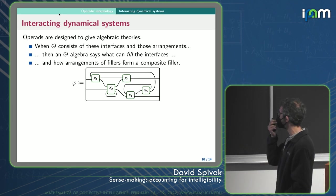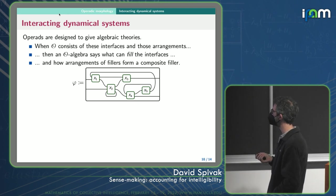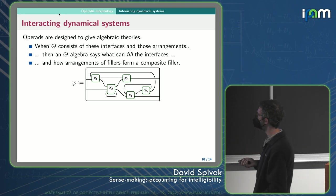So operads are designed to give algebraic theories. Basically, you don't just have these boxes, you install stuff into them, you put stuff inside them. So if you had an operad that consisted of certain interfaces in certain arrangements, then what's called an O algebra is a set of things that are allowed to fill the interfaces. Like before, we just had these boxes within boxes.